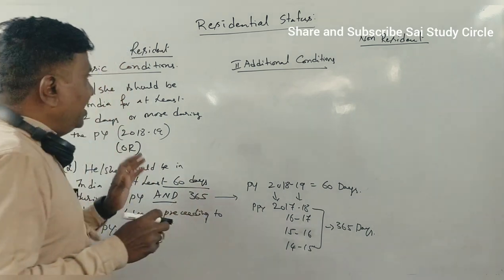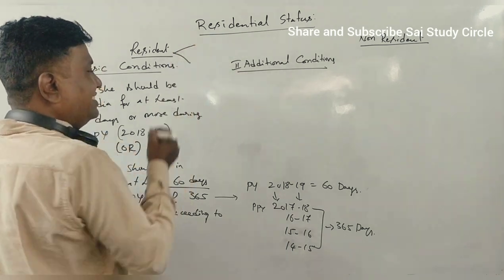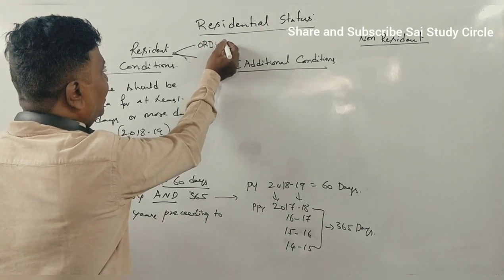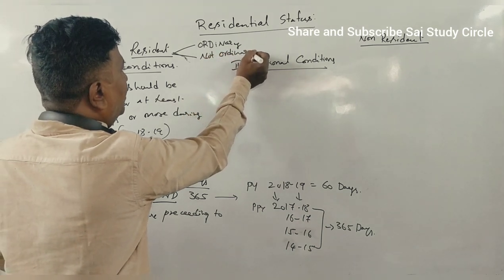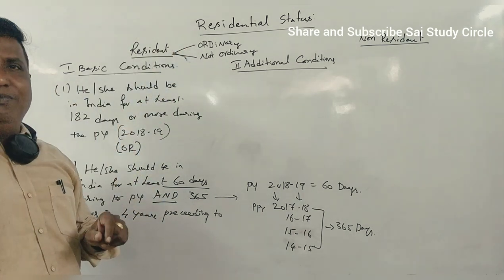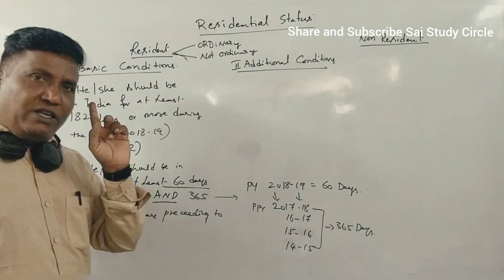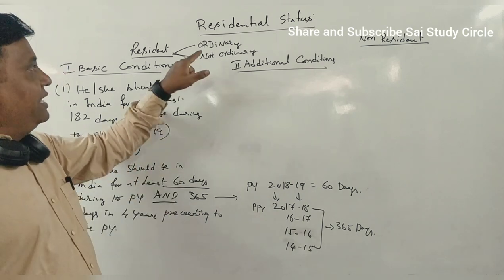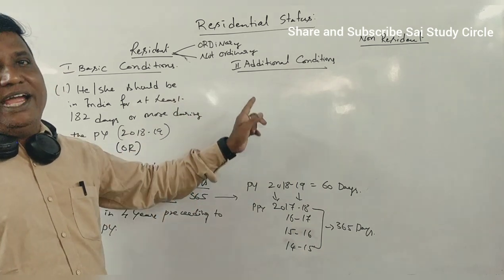Now we understand who is a resident and who is a non-resident. Residents are of two types: one is called an ordinary resident, and the other is a not-ordinary resident. To become an ordinary resident, the same person who satisfies any one of the basic conditions must also satisfy both additional conditions. To become an ordinary resident, you must satisfy any one of the basic conditions AND both additional conditions.